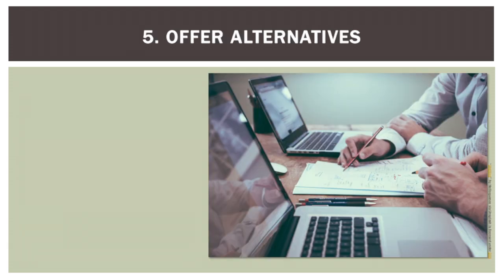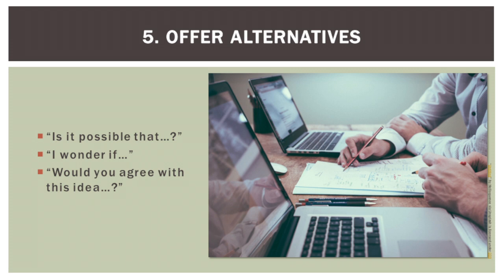5. Offer alternatives. Another way to understand someone is to offer alternatives to what they are saying. For example: 'Is it possible that...,' 'I wonder if...,' or 'Would you agree with this idea?' You can use these phrases to check for understanding, take the other person's ideas further, or perhaps to take them in a new direction.